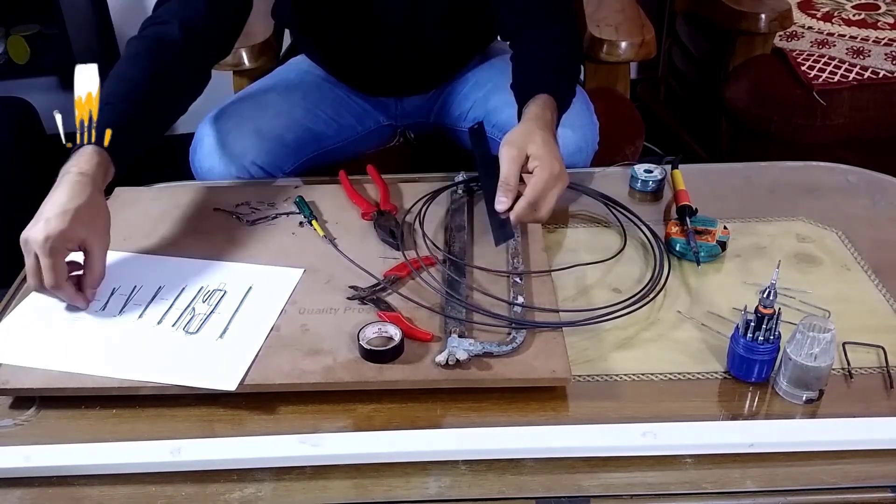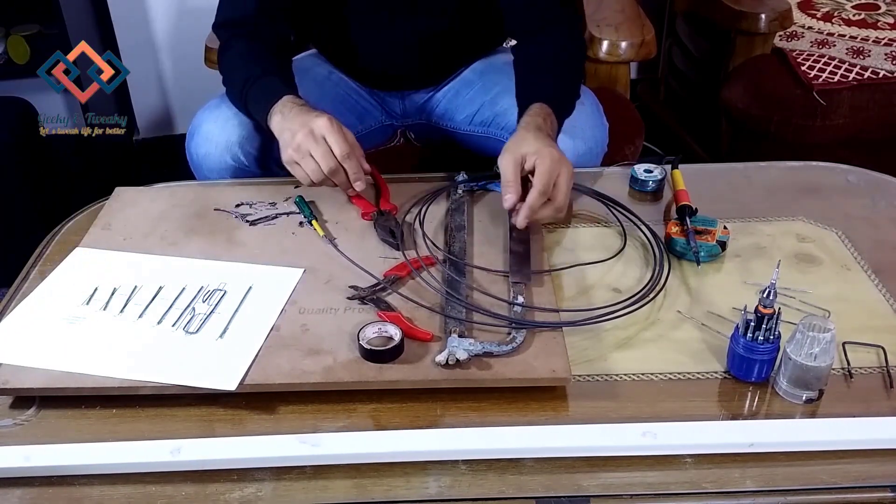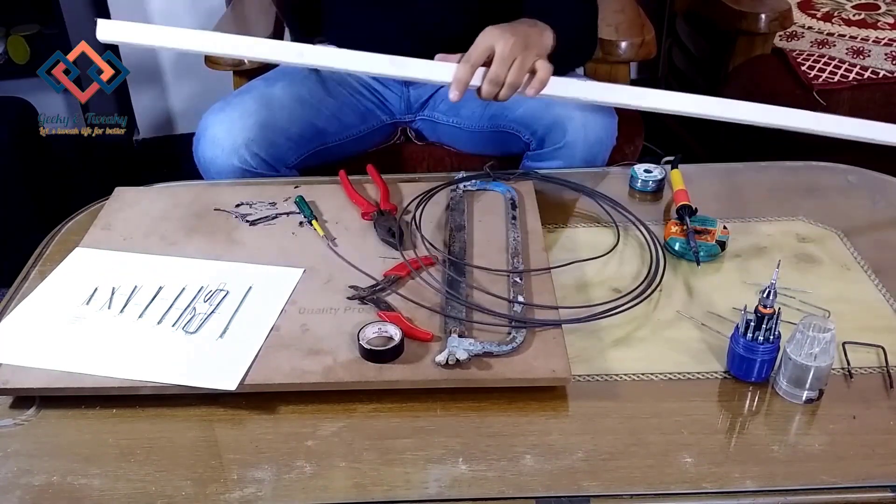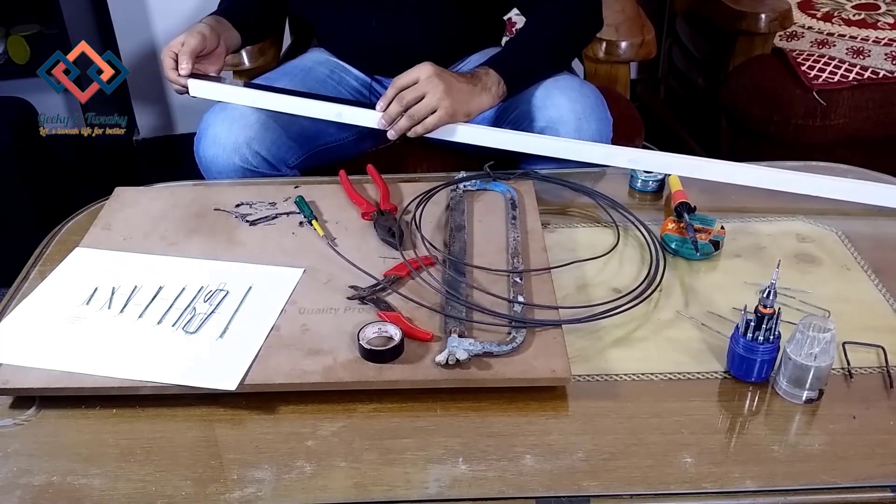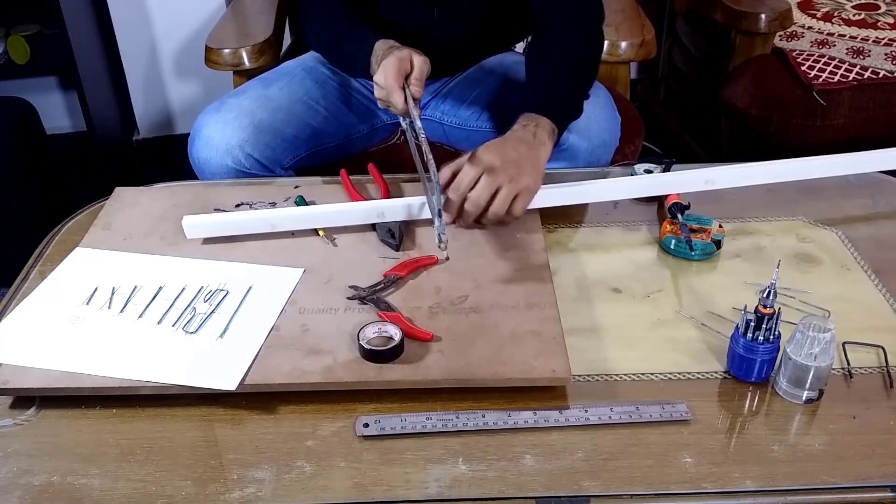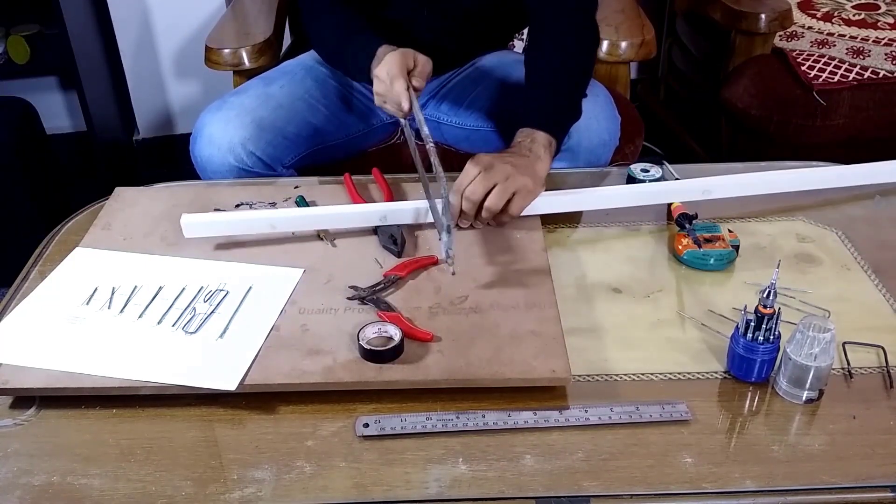Now cut the PVC casing to use as the boom for the antenna. Length of this piece can be calculated by adding together the separation between all the antenna elements. One inch margin on each end will be good for the stability of the antenna.